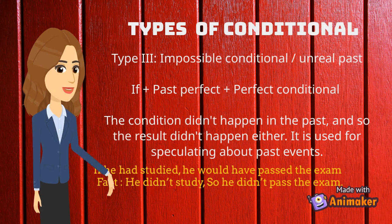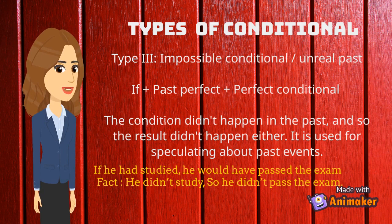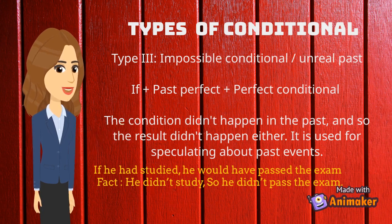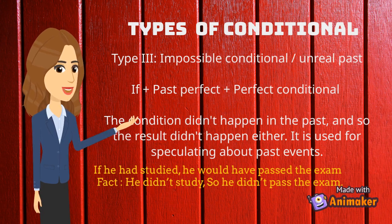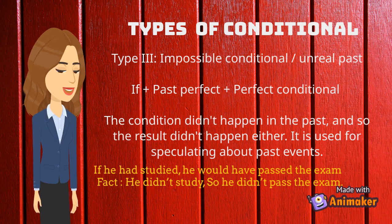The third type is called impossible conditional or unreal past. In this type, the condition didn't happen in the past, and so the result didn't happen either. It is used for speculating about past events. The pattern used in this type is: if + past perfect + perfect conditional. For example, 'if he had studied, he would have passed the exam.' The fact for this sentence is that he didn't study, so he didn't pass the exam.